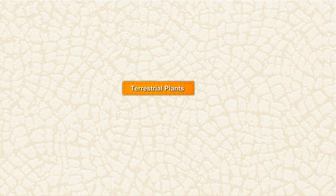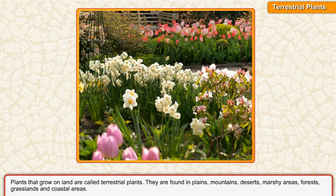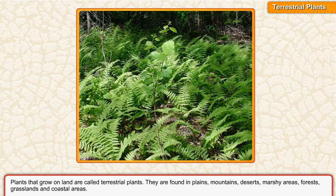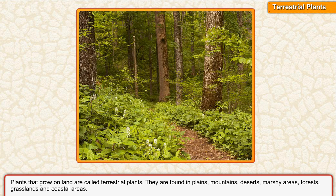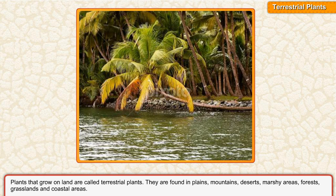Terrestrial Plants. Plants that grow on land are called terrestrial plants. They are found in plains, mountains, deserts, marshy areas, forests, grasslands, and coastal areas.